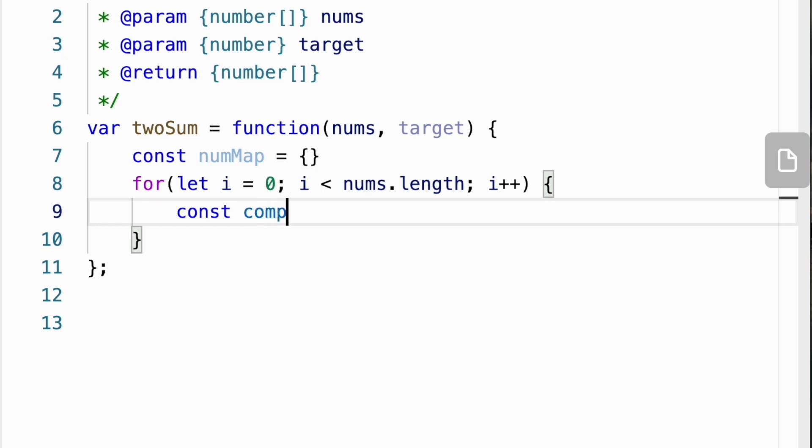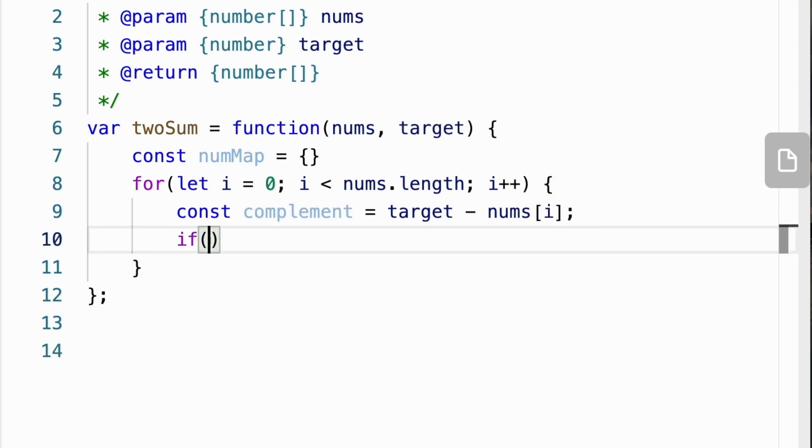For every element we calculate its complement, which is the difference between the target and the current element. Then we check if the complement exists in our hashmap.